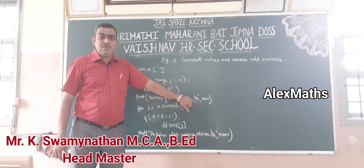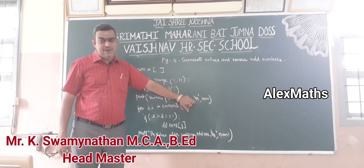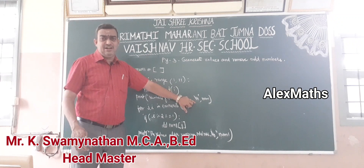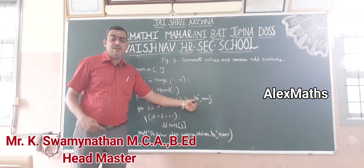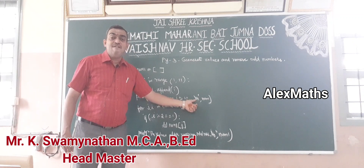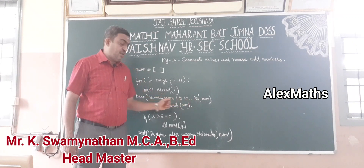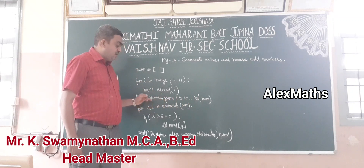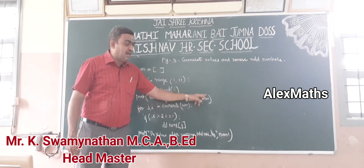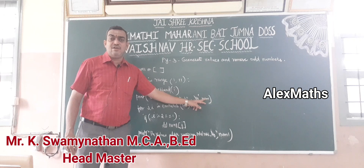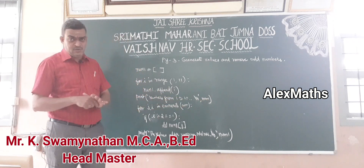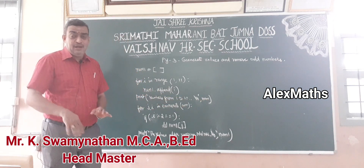There are escape sequences such as backslash n, backslash t, backslash b, and backslash a. Backslash n is used to print in a new line. Now the second part: how do I remove the elements which are already in this list?